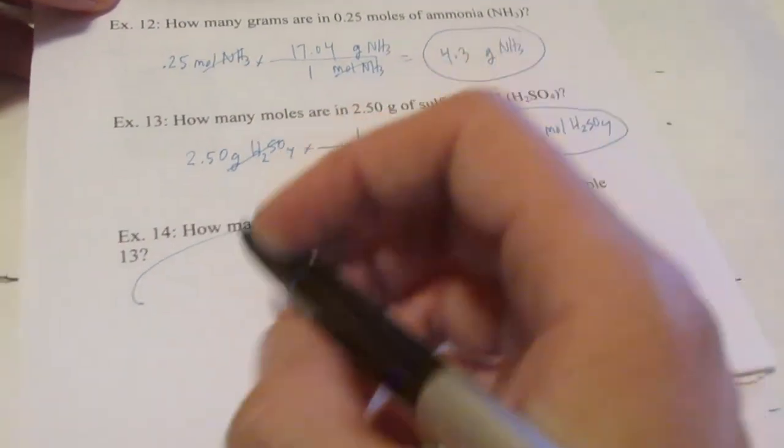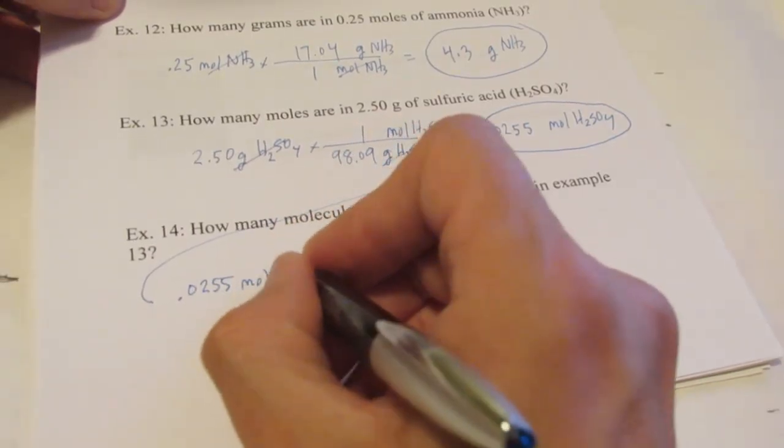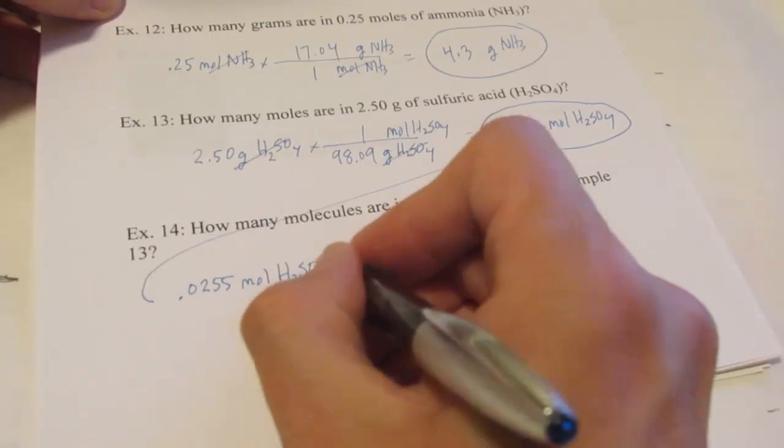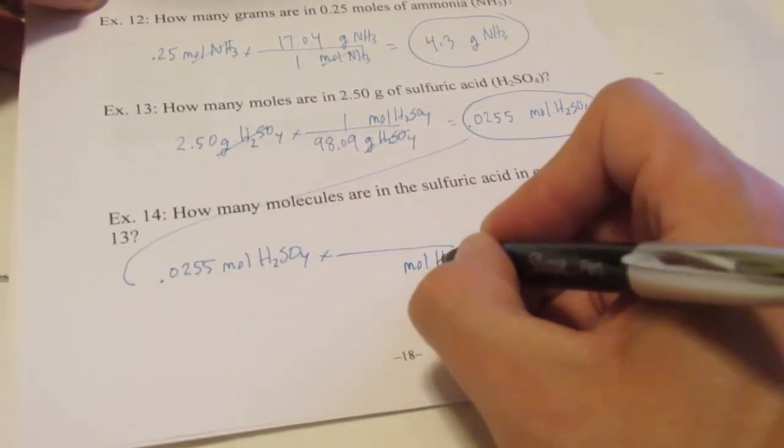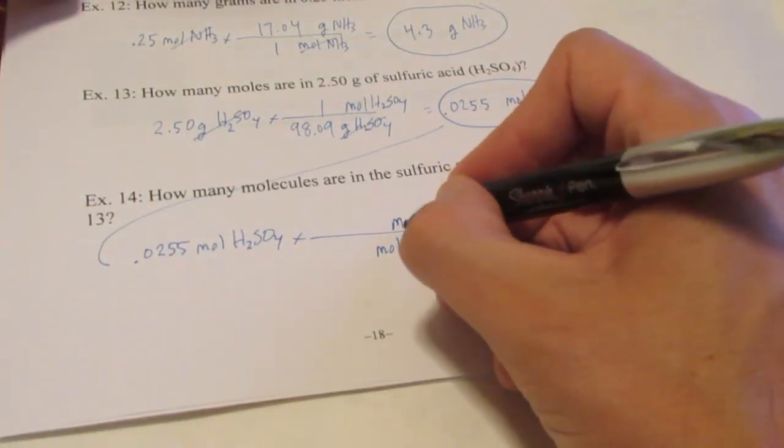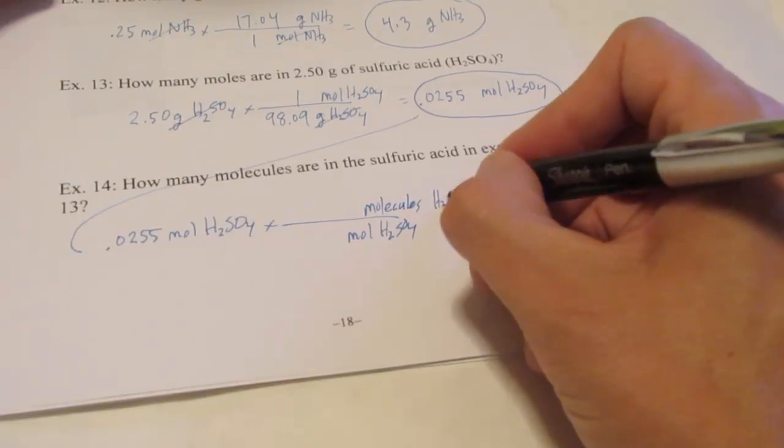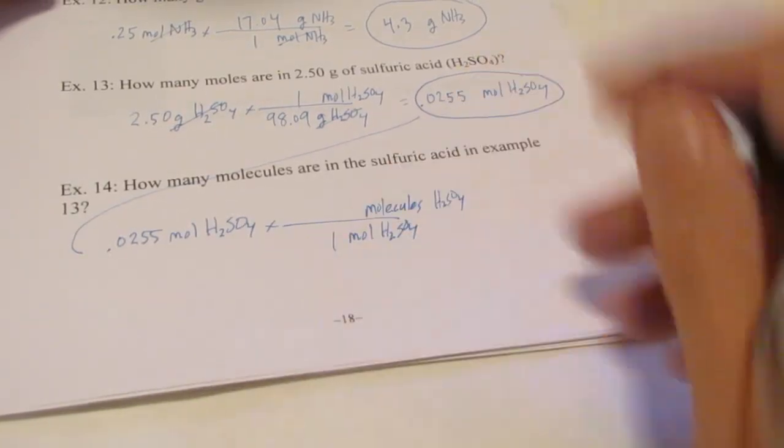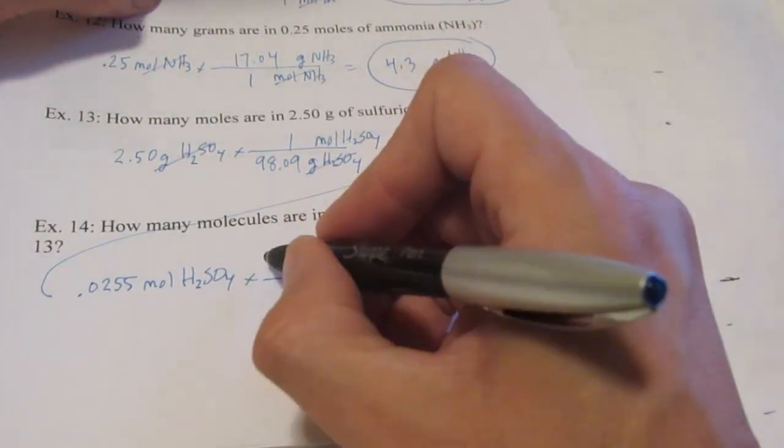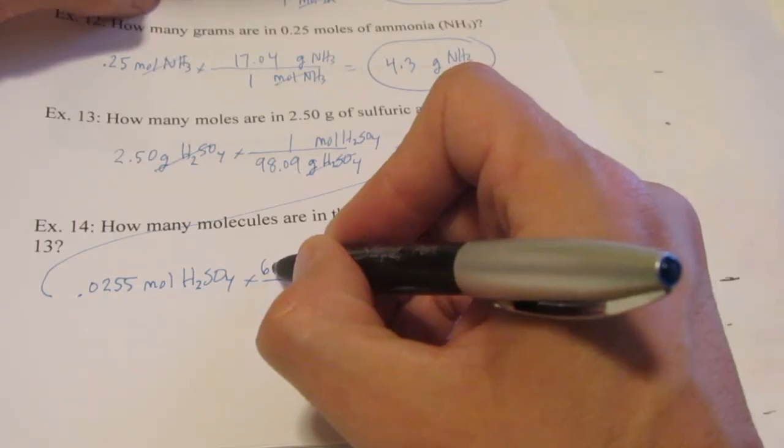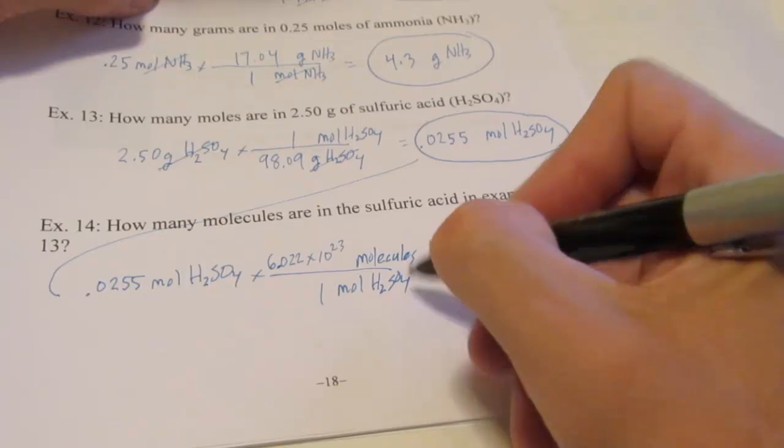So we have 0.0255 moles of H2SO4. We'll get out of moles of H2SO4. And we're going to get into molecules of H2SO4. Put a 1 by mole. And a molecule is a fundamental unit, just like an atom was. So there are 6.022 times 10 to the 23rd molecules in a mole.